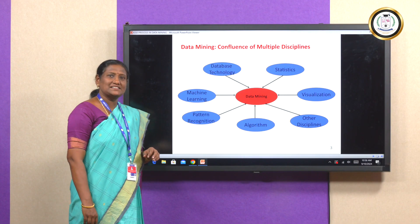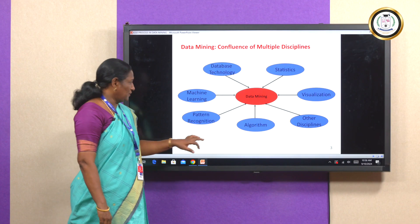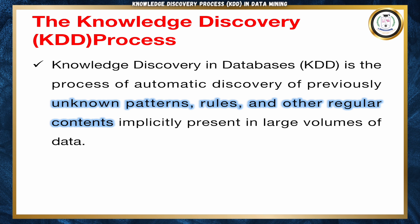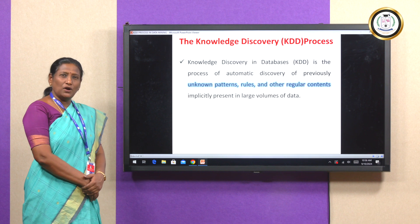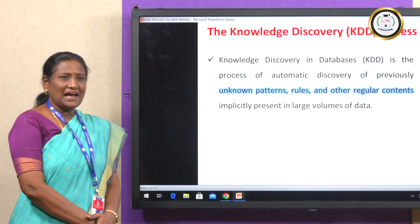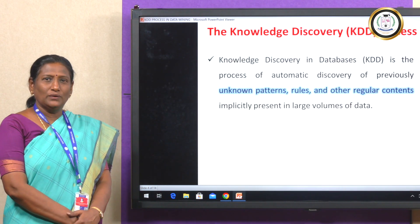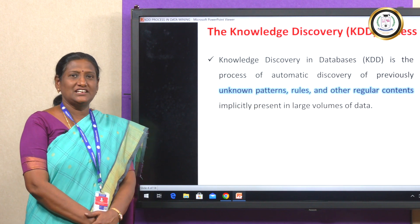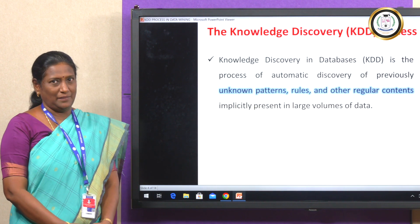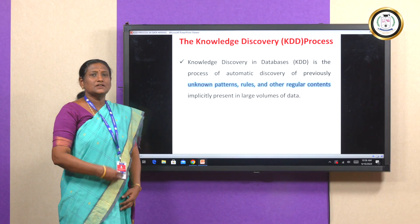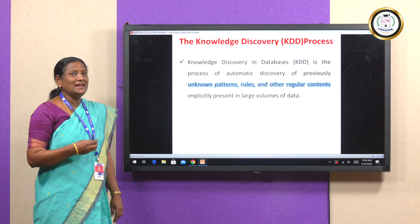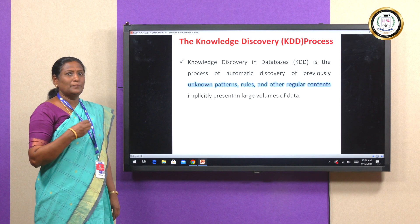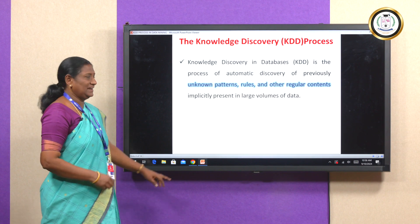KDD is the process of automatic discovery of previously unknown patterns, rules, and other regular content from large amounts of databases. KDD was a name given to data mining at the initial stage during its evolution. After its due course of evolution, data mining became one of the key steps of the KDD process.